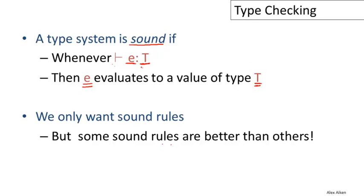We only want sound rules, but some sound rules are better than others. If I have an integer literal and want to give it a type, I showed you the best rule before where we said i has type int, but it would also be correct, just not very precise, to say i has type object.